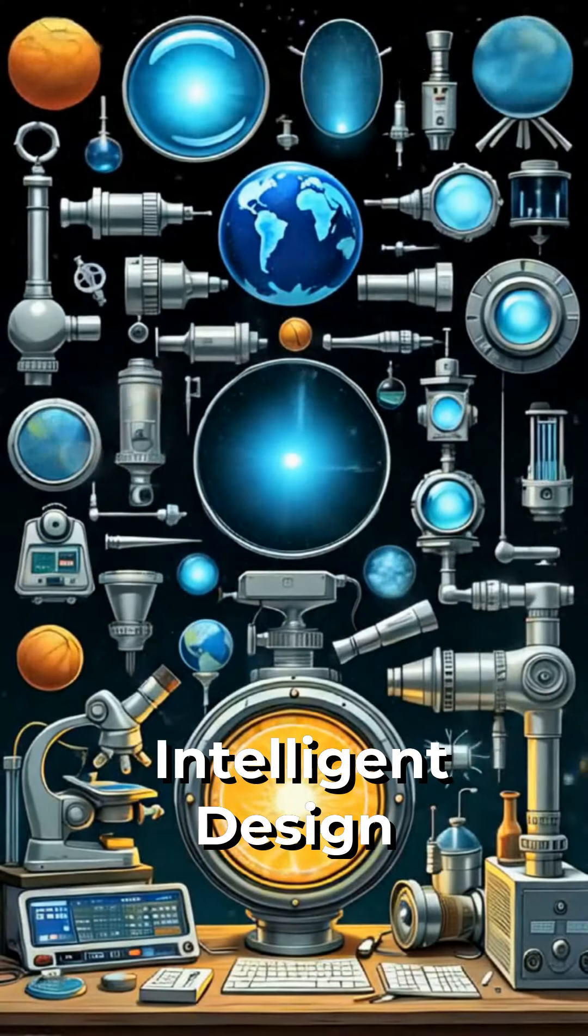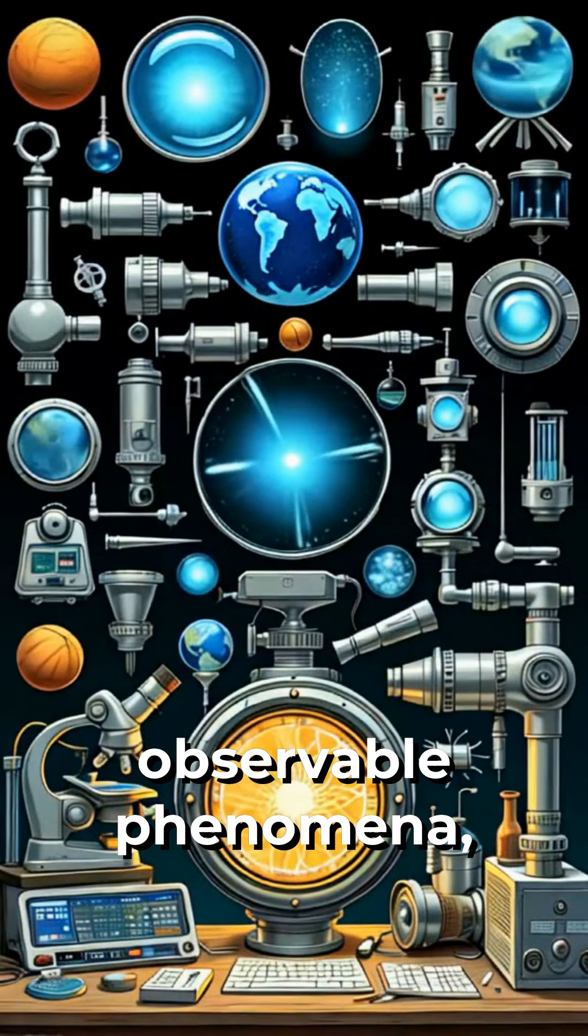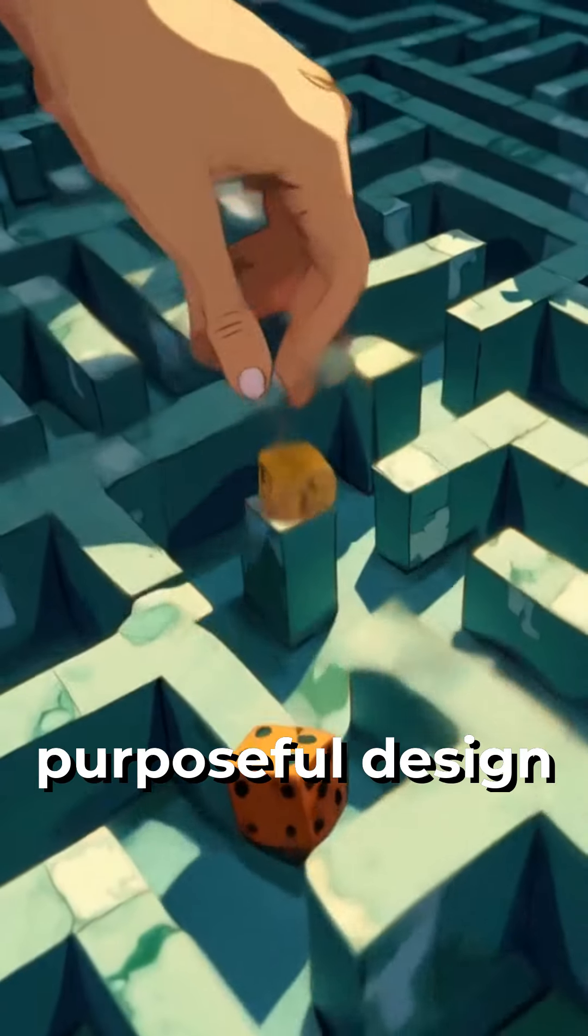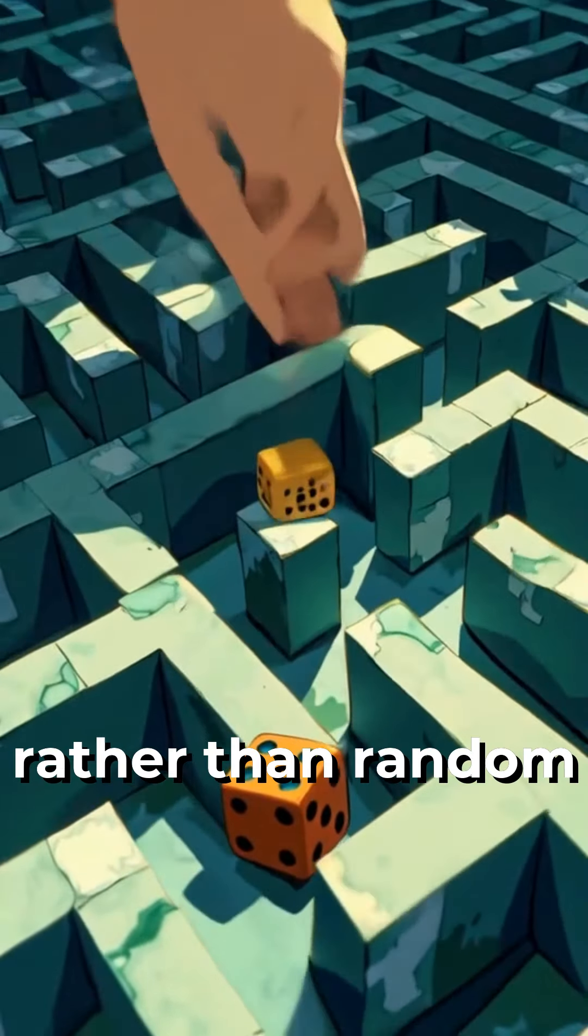In conclusion, intelligent design is grounded in observable phenomena, arguing that the universe's fine-tuning and biological complexity point towards purposeful design rather than random chance.